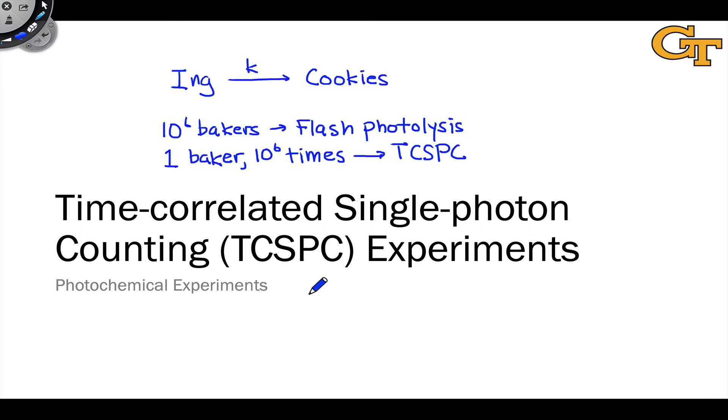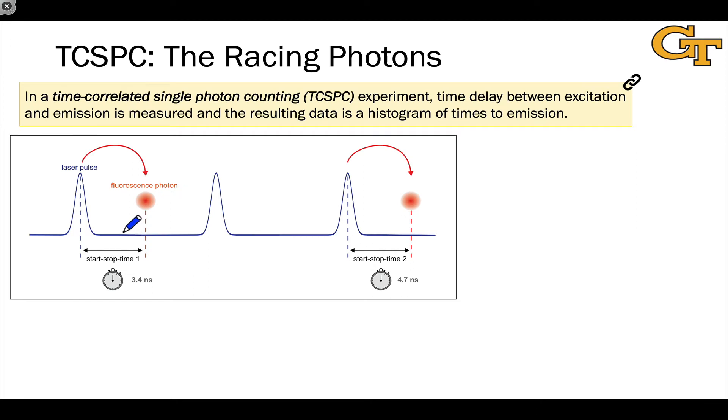The essential goal of a TCSPC experiment is to get kinetic data, just like flash photolysis, for an emission process, such as fluorescence. And the idea here is that we measure the time delay between excitation initiated by an excitation pulse, and emission as measured by a fluorescence detector at right angles to the sample. And we repeat this millions and millions of millions of times to take advantage of statistics and the law of large numbers. And the data we get is a histogram of the times between excitation and emission. Following the light situation as a function of time, TCSPC data looks like this.